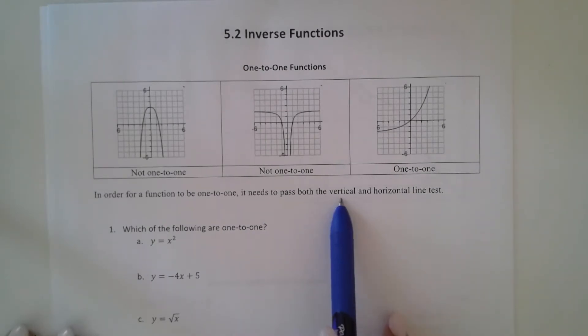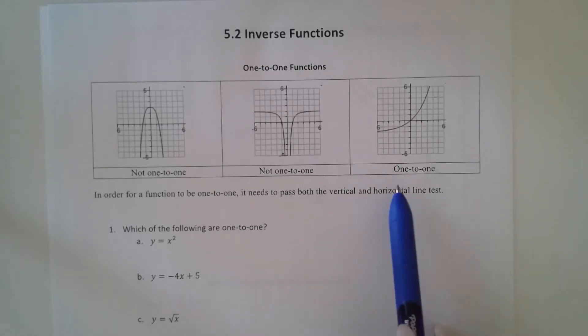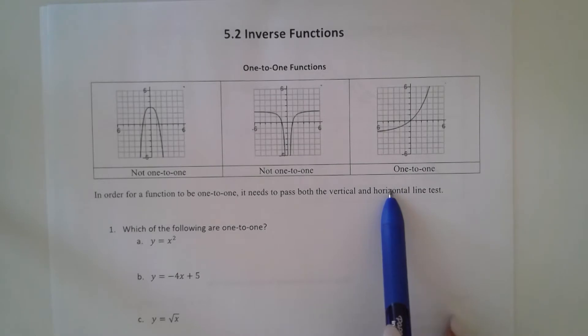If you remember the vertical line test, that tells if it's a function. So the vertical line test tells us function or not, and the horizontal line test tells us if it's one-to-one.